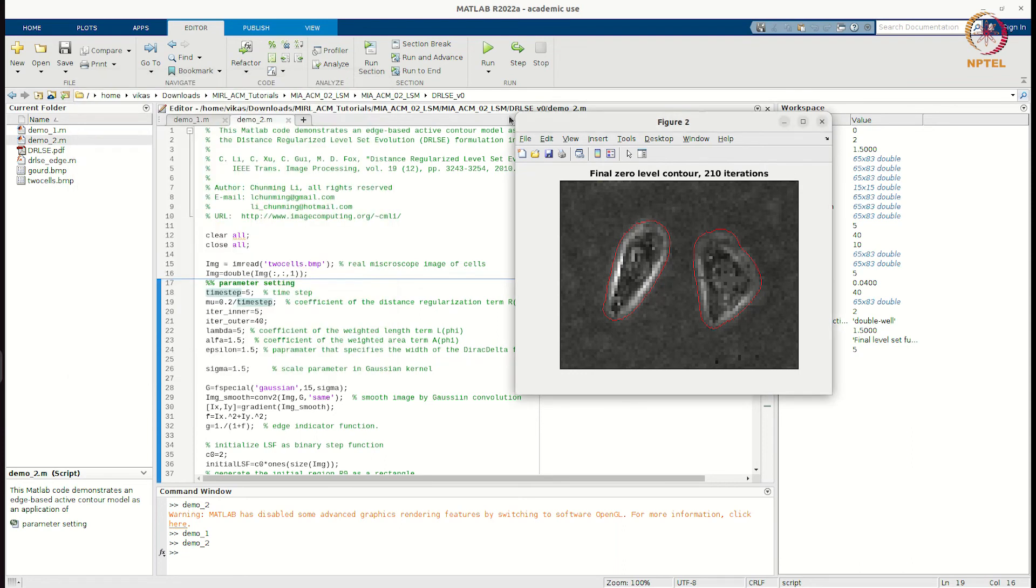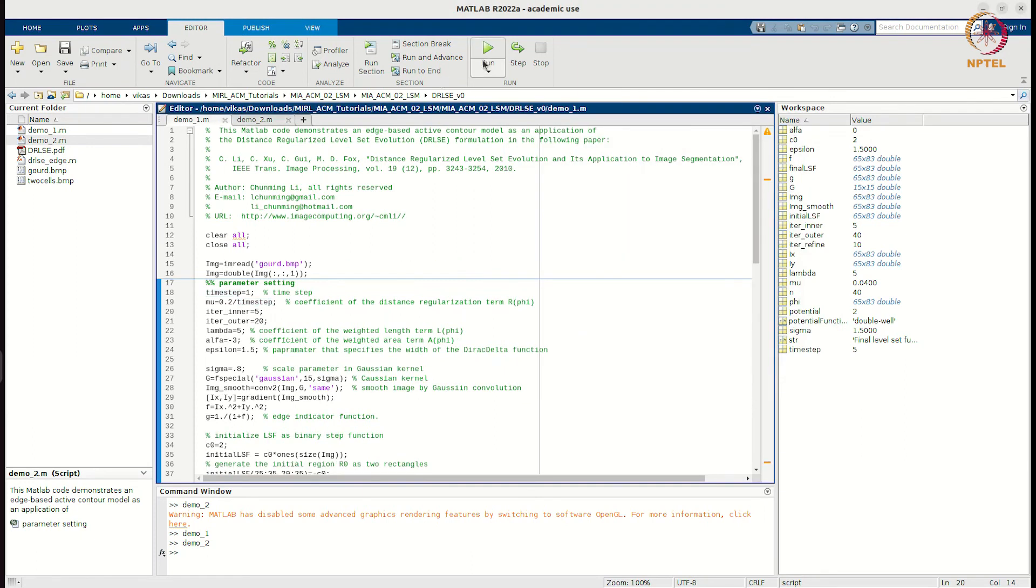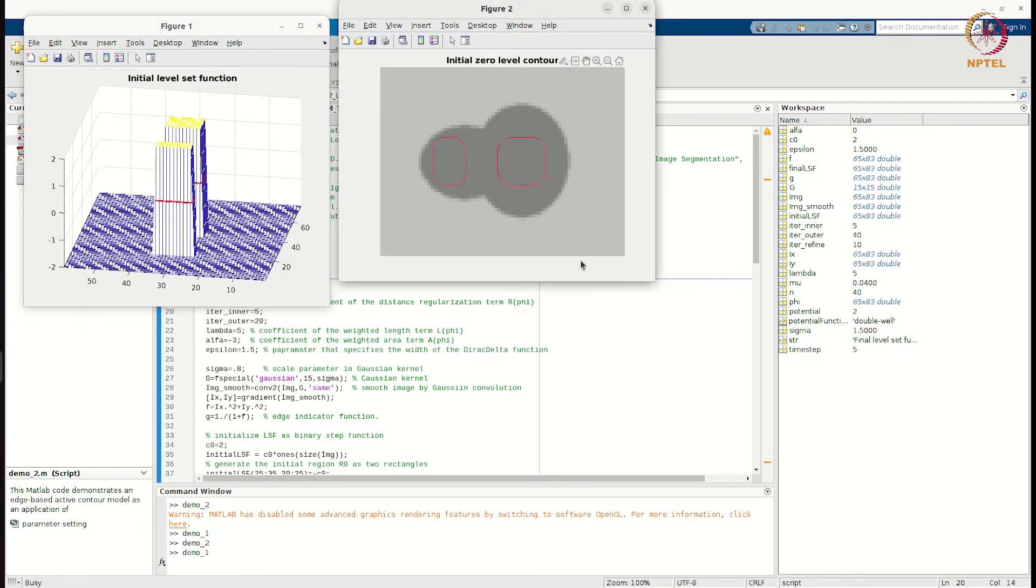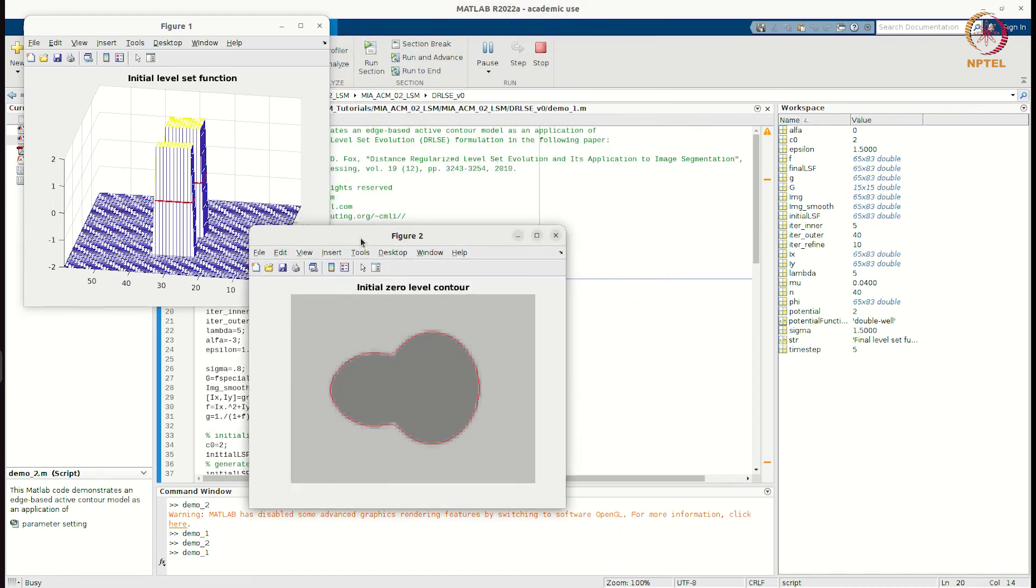There is another demo that is available. Initially you have a level set function of this type. And after some time it evolves and it captures the boundary of the object. This is the final shape of the level set function.